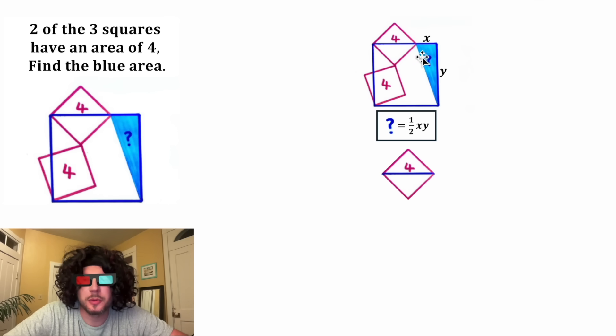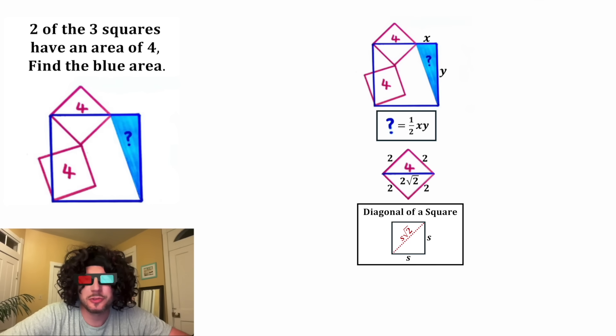And then next, let's focus on this square here. Since the area is equal to four, the side lengths of the square will each be equal to two. And the diagonal of the square would be equal to two root two.